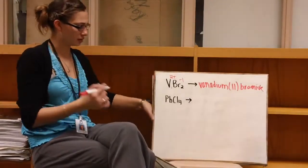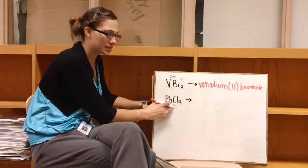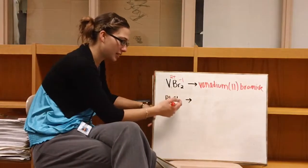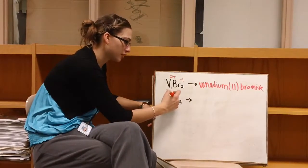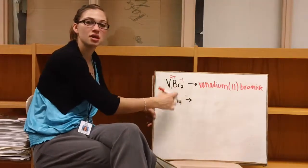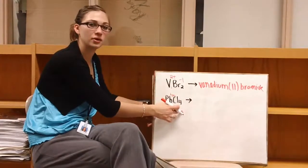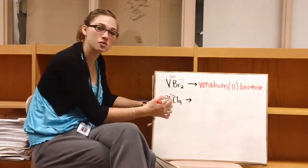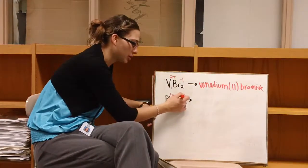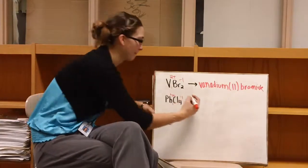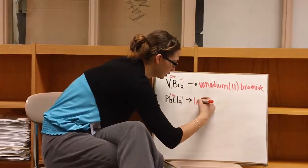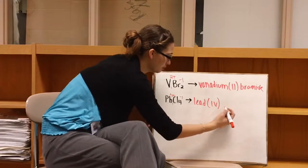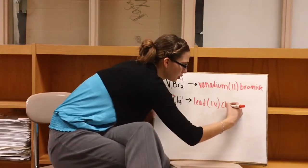All right, last one. So we have PbCl4. We're going to crisscross our charges back up to the top. We know that the charge for lead here would be plus four, since the subscript for chlorine is four. And since there's no number in front of lead, we know that it's a one. So the charge of chlorine is negative one. So we can write lead(IV), Roman numerals, chloride.